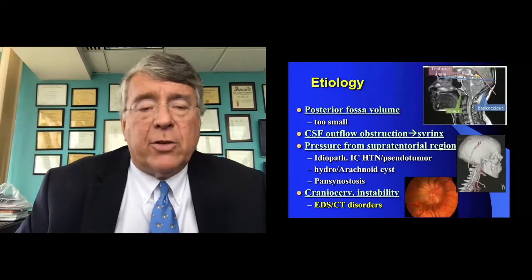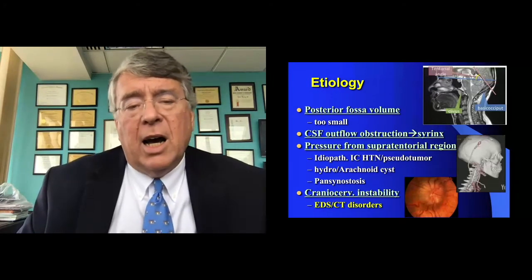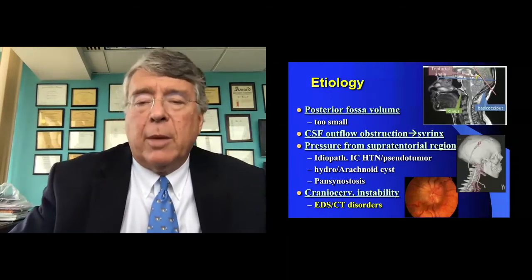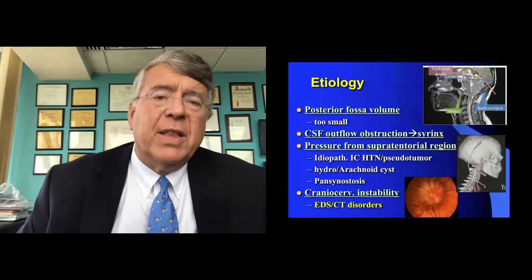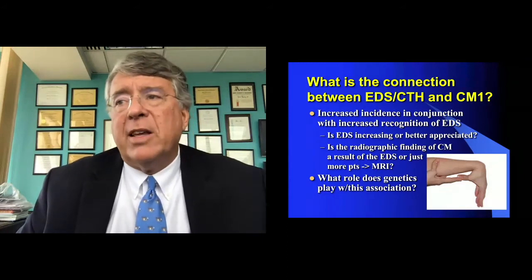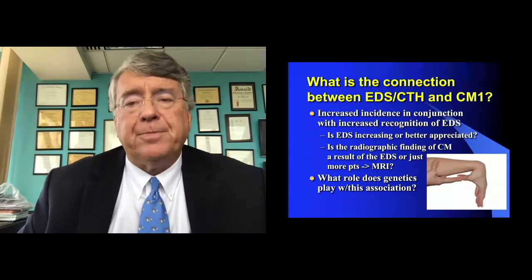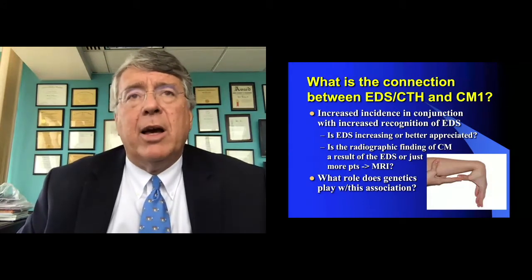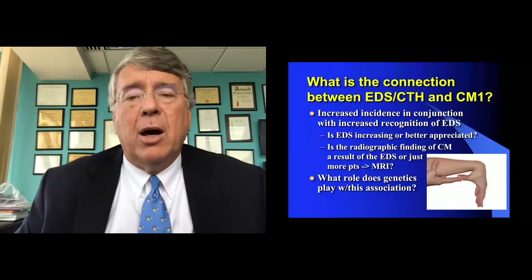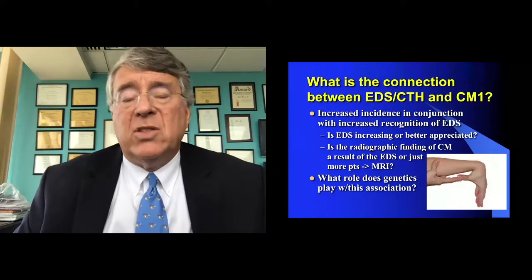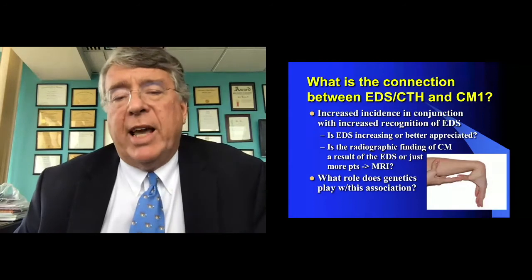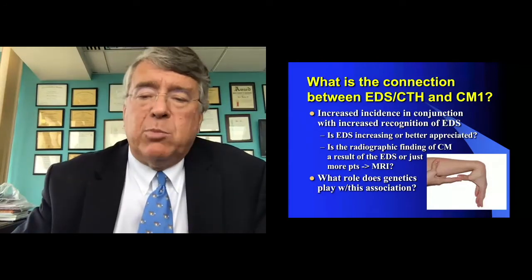Today we also have a lot of folks with craniocervical instability, and you just heard from Paolo — what is the significance of this? These are patients with a lot of ligamentous laxity. So what is the connection between EDS and Chiari malformation type 1? We know there are lots more patients with EDS coming to our attention, and lots of patients with incidentally-found Chiari malformation. Is EDS contributing to the Chiari? Is the Chiari just a result of more EDS patients getting MRI scans? What role does genetics play?